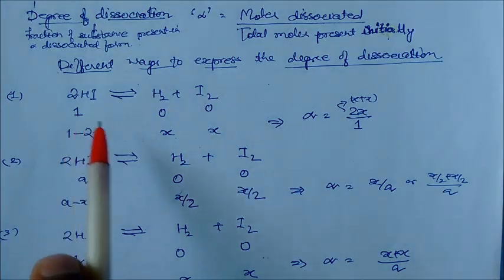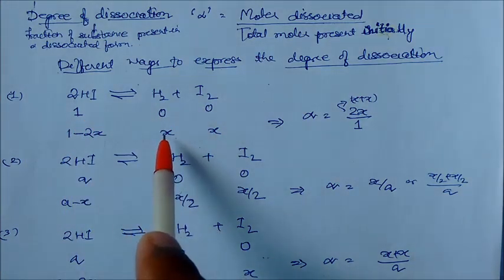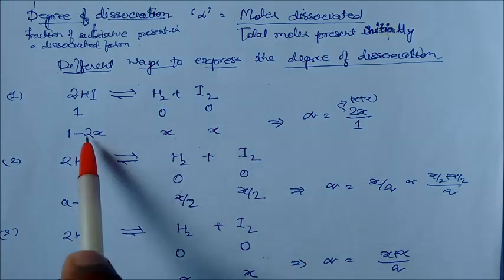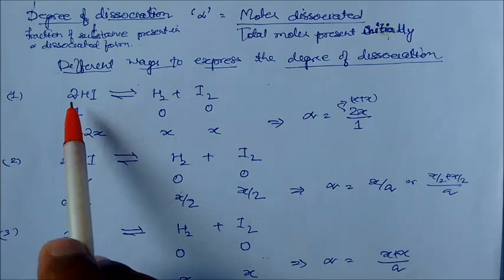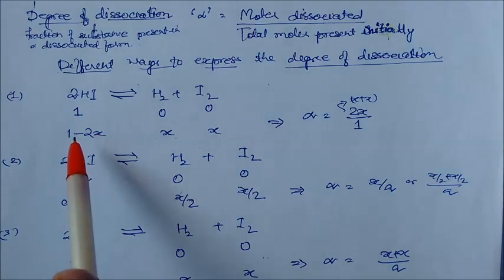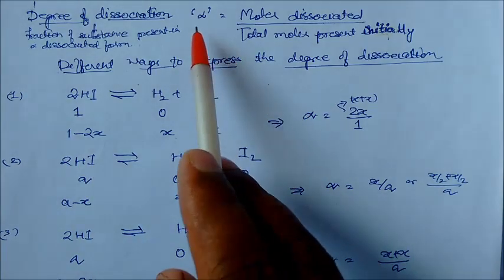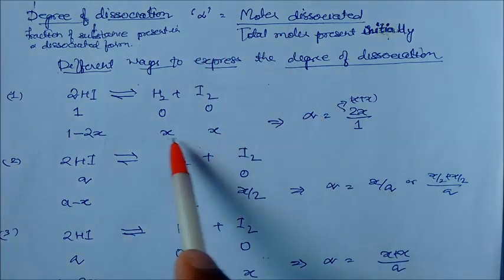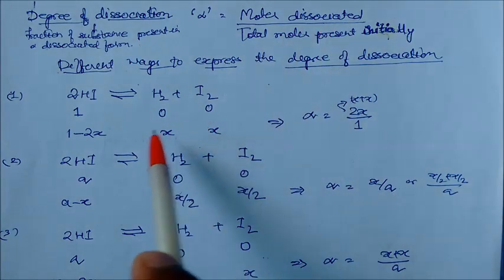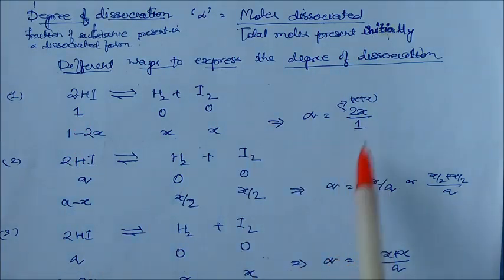Initially the moles of 2HI are 1, and H₂ and I₂ are 0, 0. If x is the degree of dissociation, then at equilibrium 2HI becomes 1 minus 2x, because 2 moles are consumed. So alpha equals the moles dissociated (x + x = 2x) divided by total initial moles (1), giving alpha = 2x.